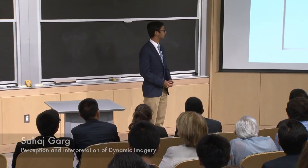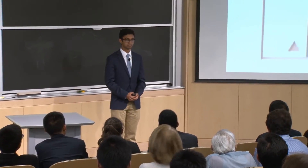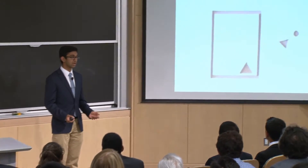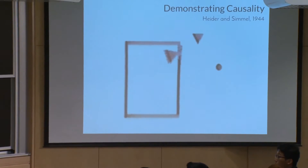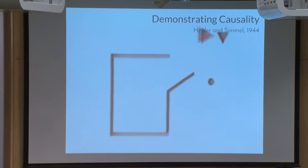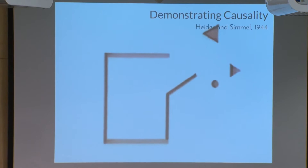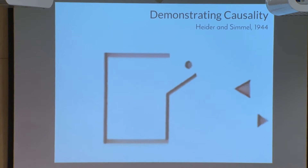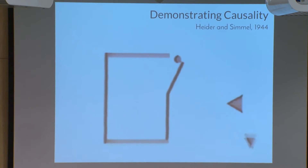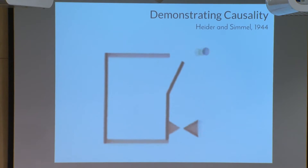Let's start with the video. Now in this video, even though the only characters are simple geometric shapes, we can still tell stories about what's going on. For example, the large triangle appears to be attacking or even bullying the small triangle, and the small circle appears to be hiding behind the door because it's scared about the fight.